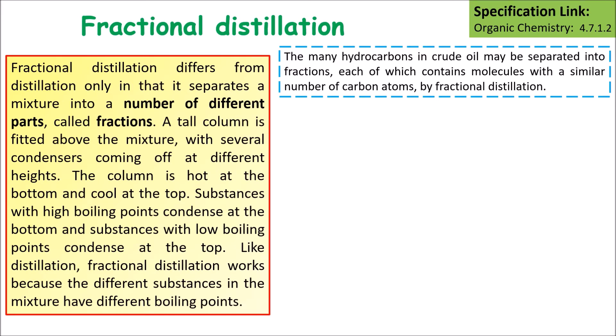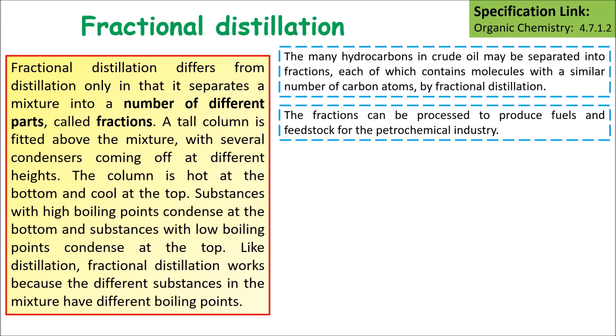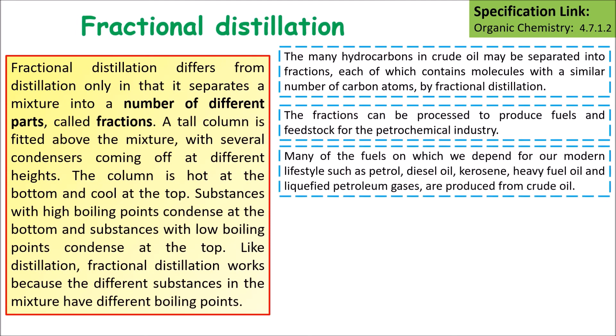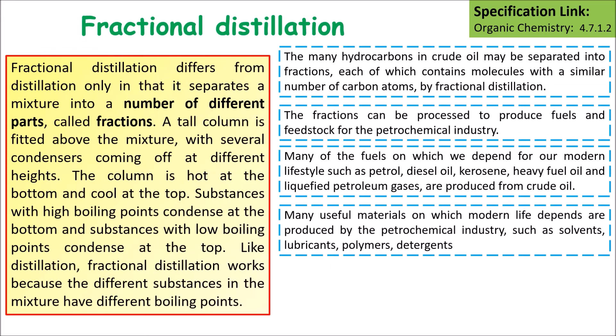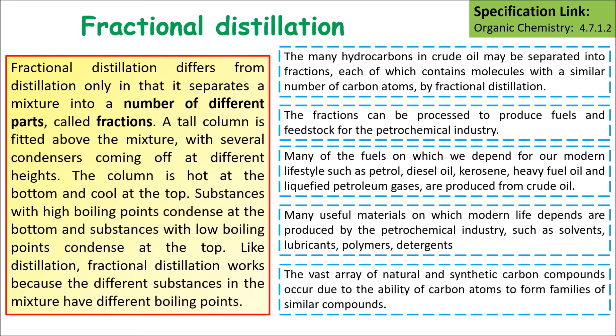Substances with higher boiling points condense at the bottom and substances with lower boiling points condense at the top. There are many different hydrocarbons in crude oil that may be separated into different fractions, each of which contains molecules with a similar number of carbon atoms. The fractions can be processed to produce fuels and feedstock for the petrochemical industry. Many fuels we depend on — such as petrol, diesel, kerosene, fuel oil — are produced using fractional distillation of crude oil.